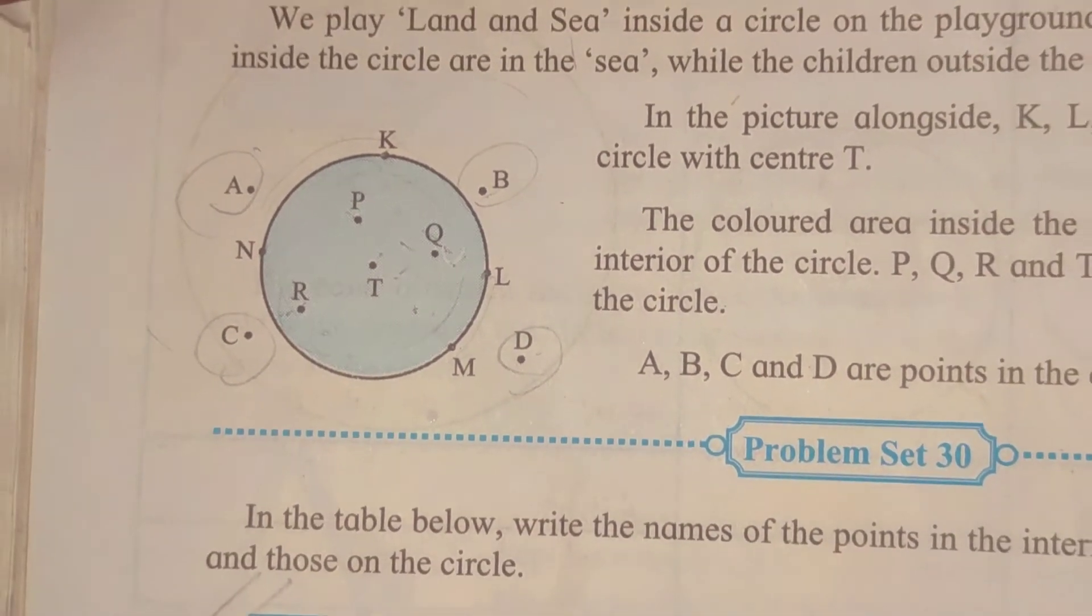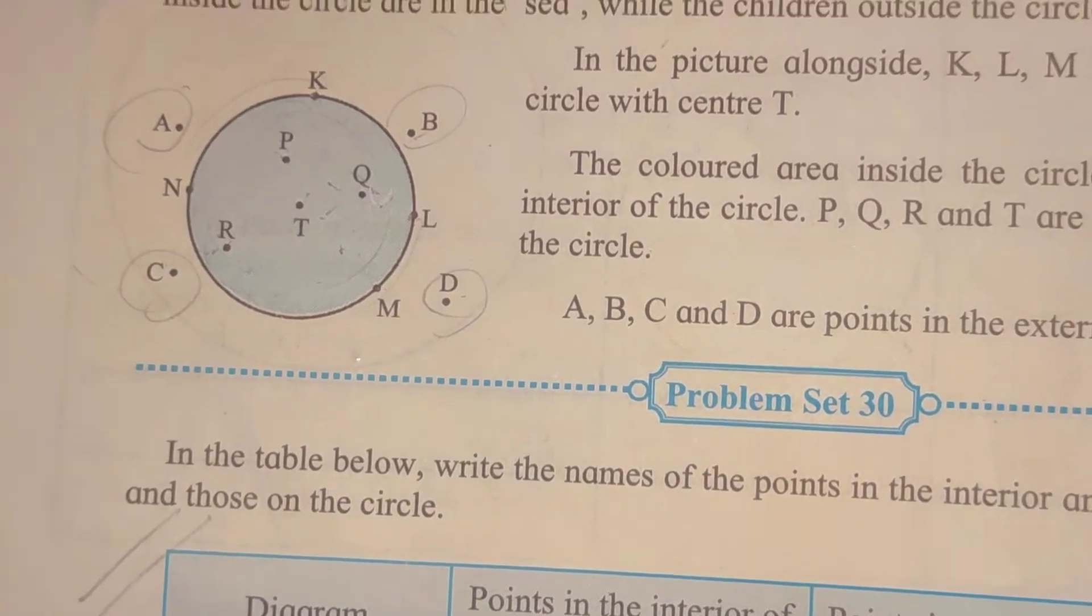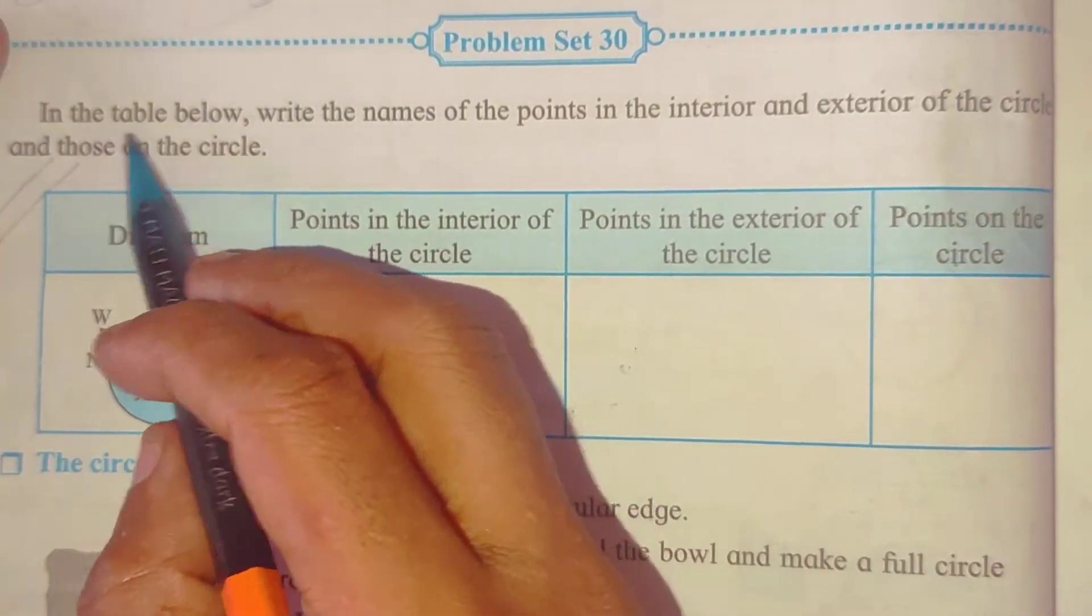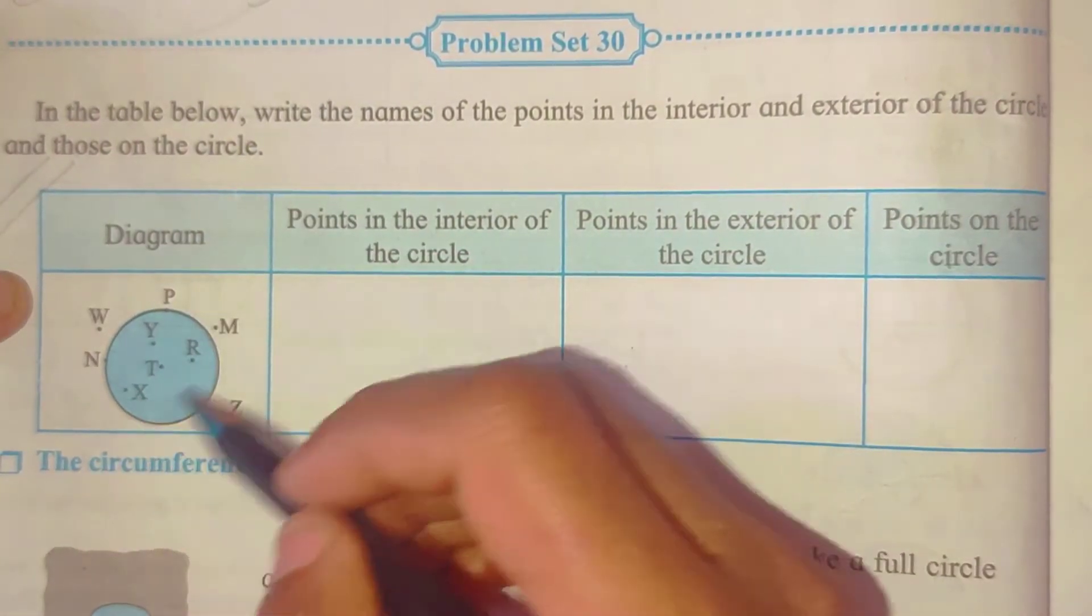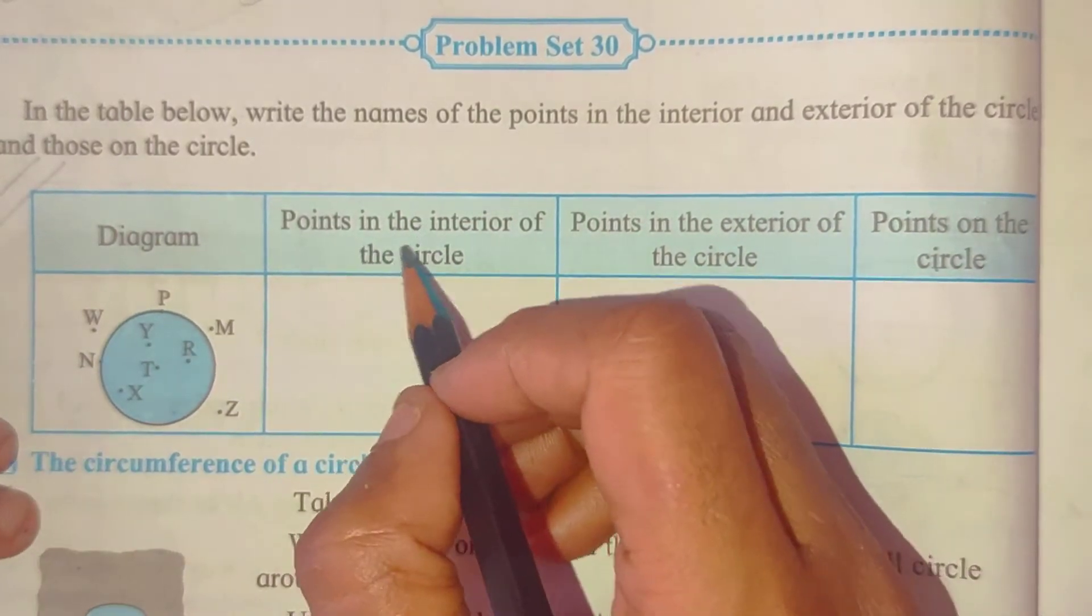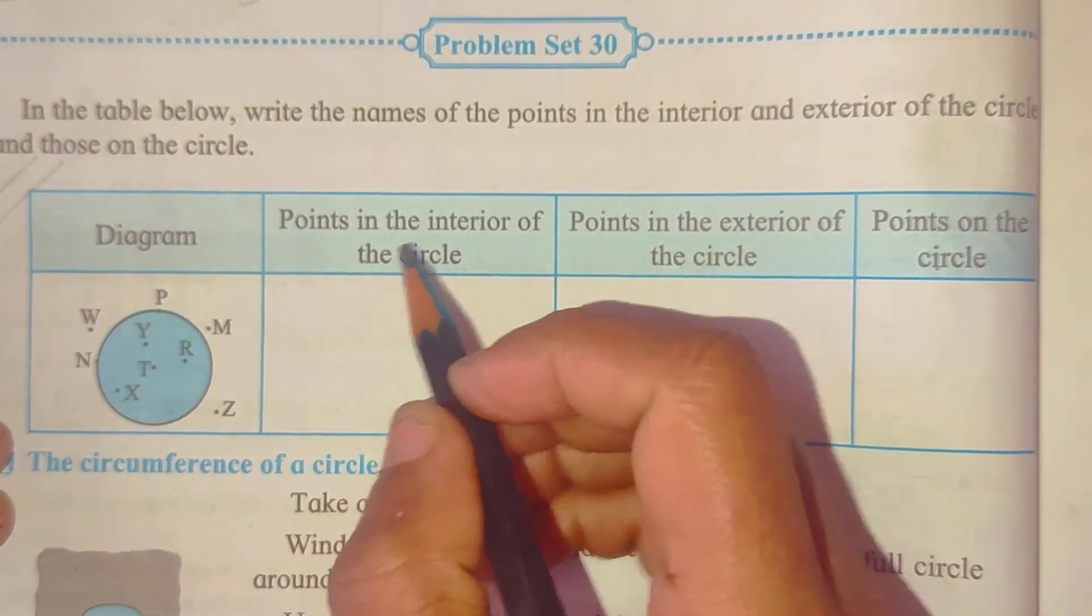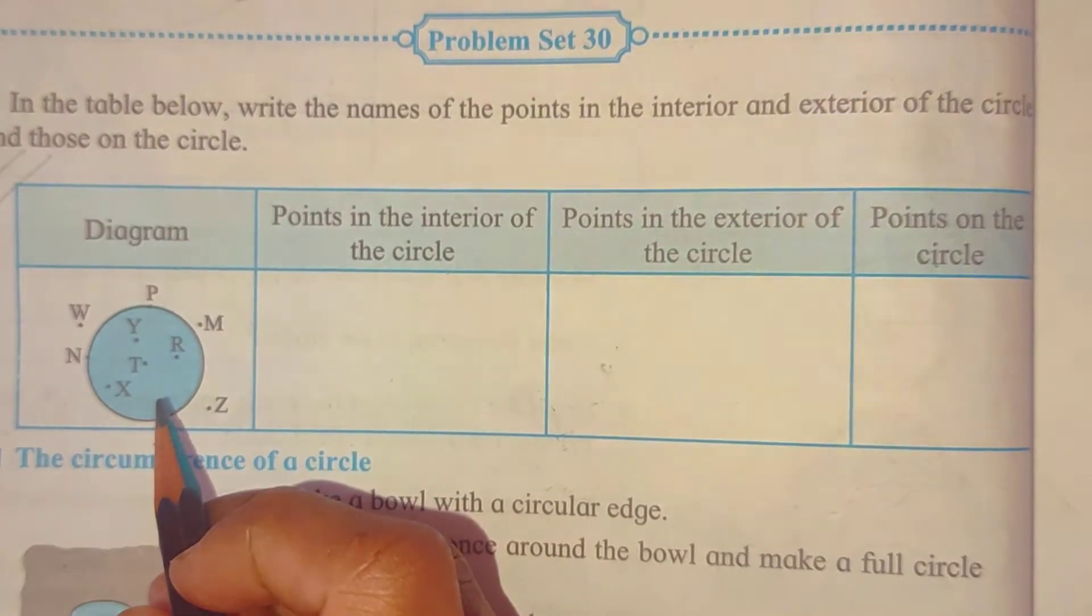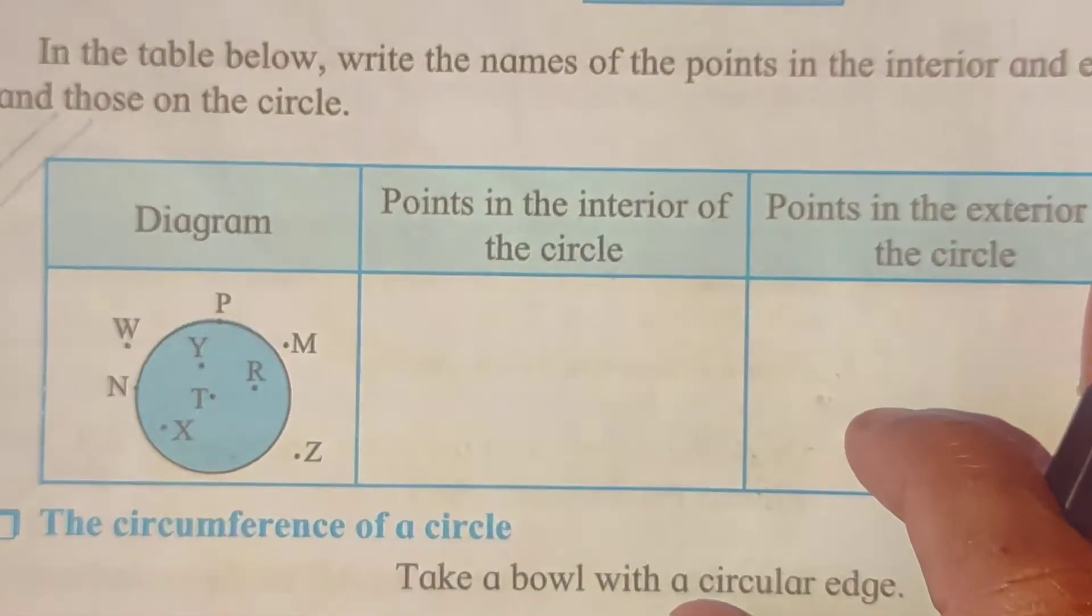They have asked us sums. So, in problem set 30, they have asked us to see this diagram and write the names. Now, points in the interior of this circle, so, याले diagram के interior में कौन से कौन से points है.